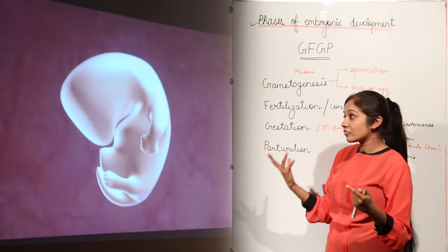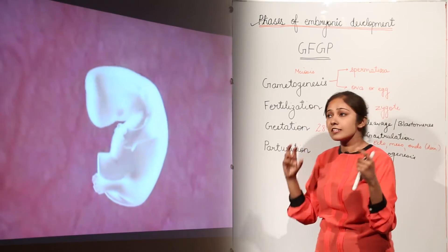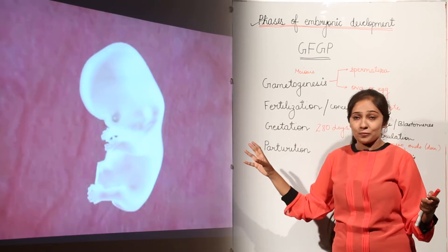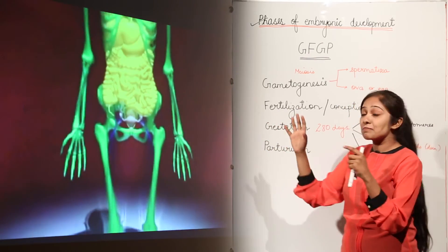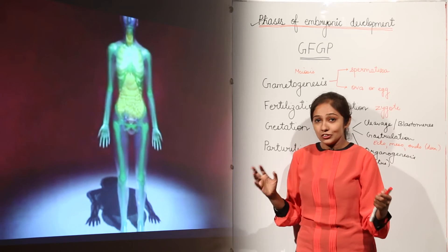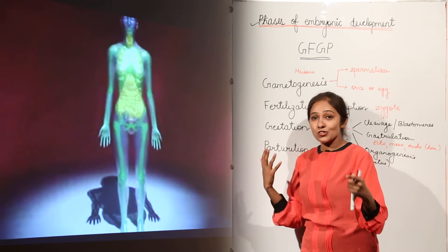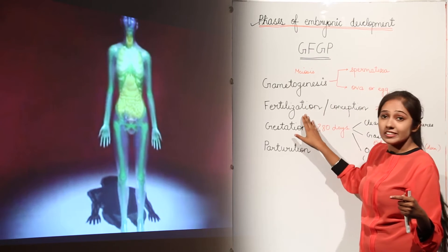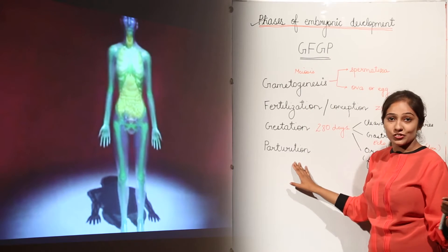So organ development and complete structure: eyes, hands, ears and all. Now this forms the complete embryo. So after this, a complete organism is formed. So this is how important it is to study these phases of embryonic development: gametogenesis, fertilization, gestation and parturition.